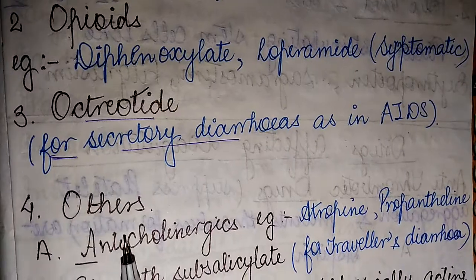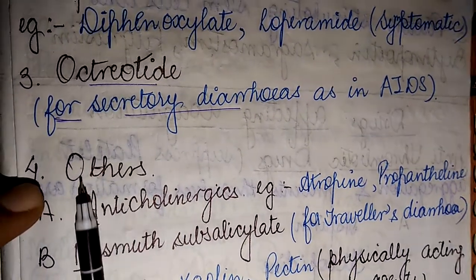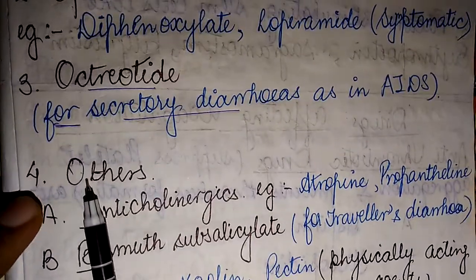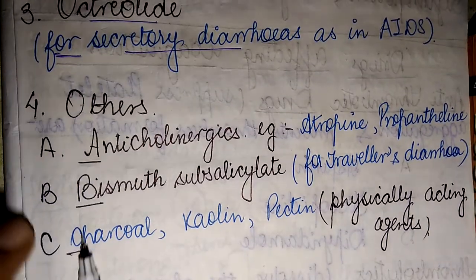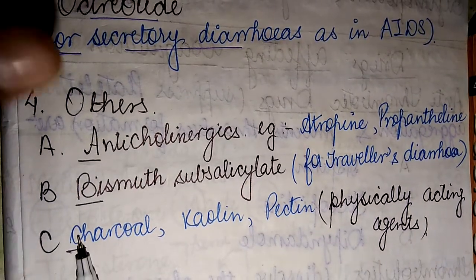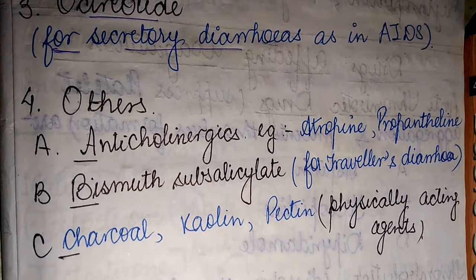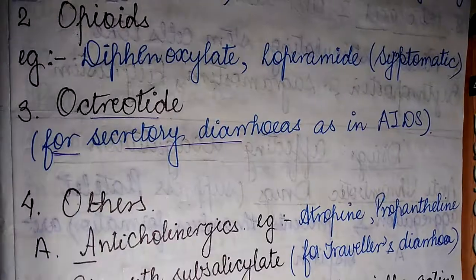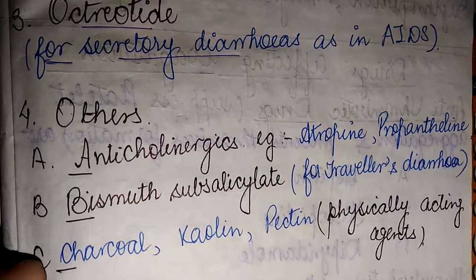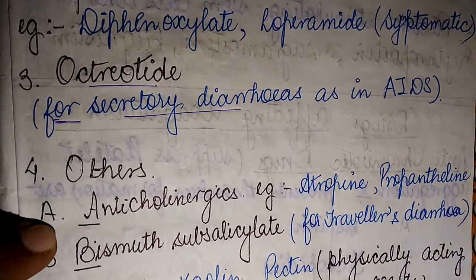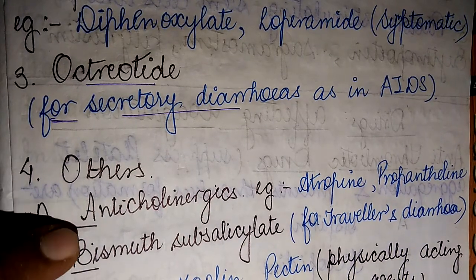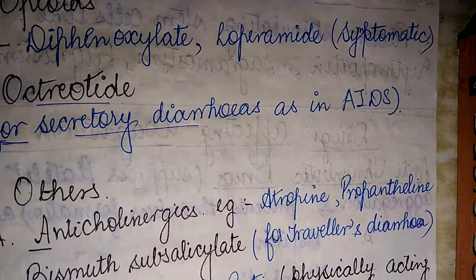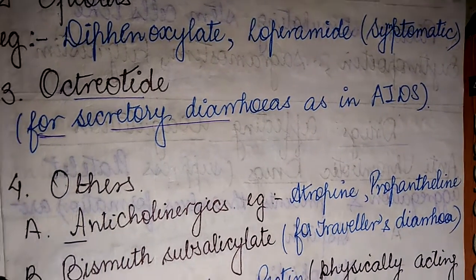The fourth O stands for others, and in this category we have three sub-categories in the form of A, B, and C. The first alphabet A stands for anticholinergics — examples include atropine and propantheline.